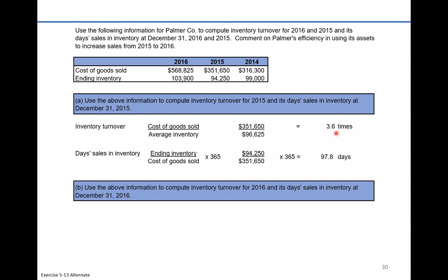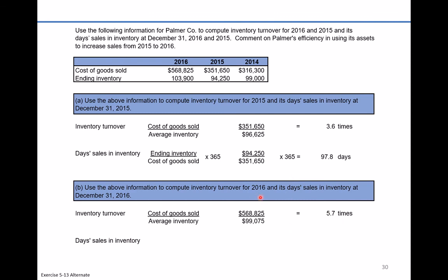For 2016, it's the same type of calculation. Inventory turnover equals cost of goods sold of $568,825 divided by average inventory. We average $103,900 plus $94,250 divided by 2, which equals $99,075. That gives us an inventory turnover of about 5.7 times — an improvement, as inventory is flipping more frequently. Because numbers are being rounded, we'll calculate day sales in inventory the longer way: ending inventory divided by cost of goods sold, times 365.